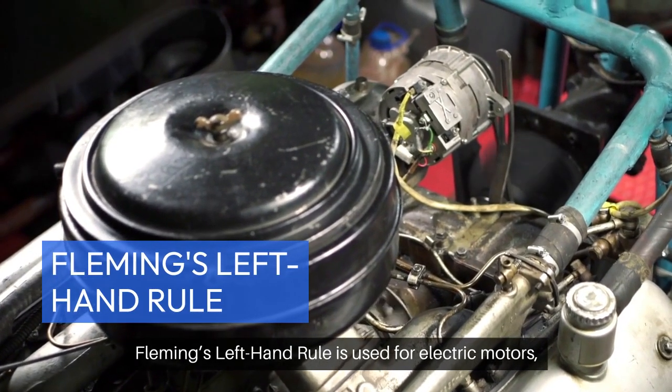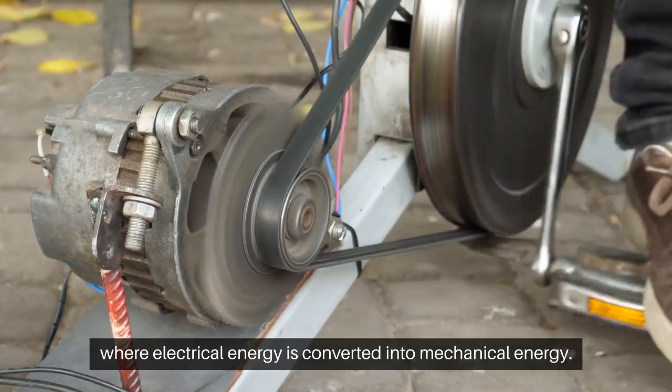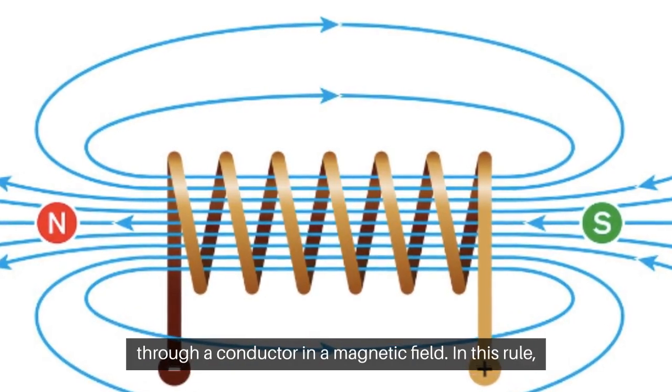Fleming's left-hand rule is used for electric motors, where electrical energy is converted into mechanical energy. It helps determine the direction of motion when a current flows through a conductor in a magnetic field.